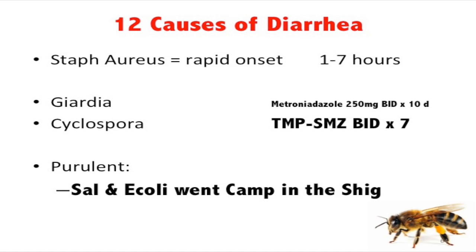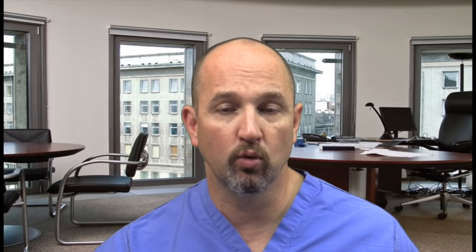There are key diarrhea causes to know. Staph aureus is super rapid onset — one to seven hours. Giardia is treated with metronidazole. Cyclospore is treated with bactrim (trimethoprim-sulfamethoxazole). The bloody diarrhea group mnemonic: Salmonella, E. coli went camping with Shig — Salmonella, E. coli, Campylobacter, Shigella. Sickle cell patients love to get Salmonella osteomyelitis, and Campylobacter is linked to Guillain-Barré syndrome.